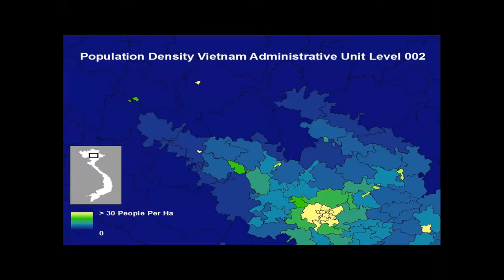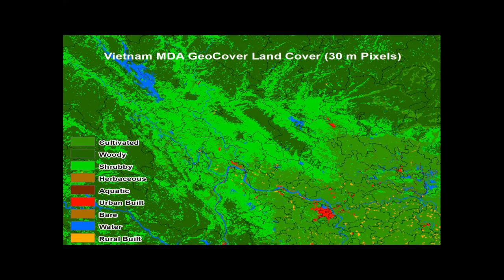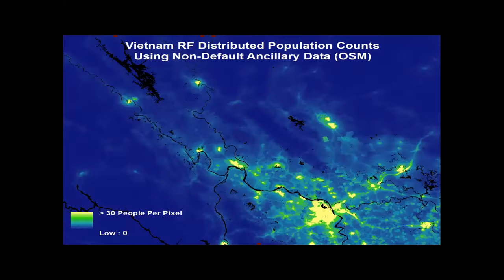To visualize the top-down approach — the dataset you'll use today — we have data from northern Vietnam where each unit may have 50,000 to 100,000 people, but we don't know where within them. We use building location data, land cover information, and nighttime light brightness within each administrative unit to predict population density at the smaller grid cell level, producing an estimate for each one of those grid cells.